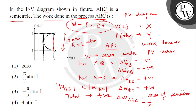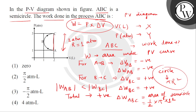The area of the semicircle equals half multiplied by pi multiplied by radius squared. The full circle area is pi r squared, so the semicircle area is half pi times 1 squared, giving us pi over 2. Converting units, the correct answer is pi over 2 atmospheres·litres, which corresponds to the correct option.